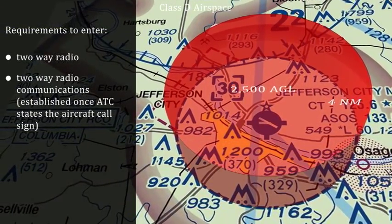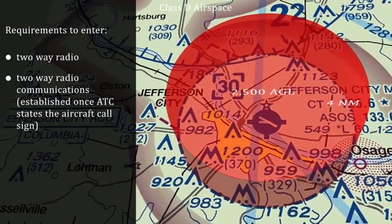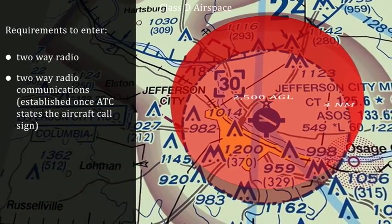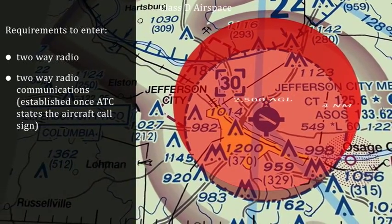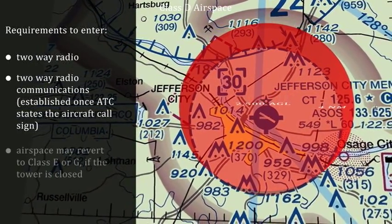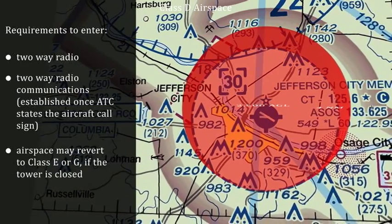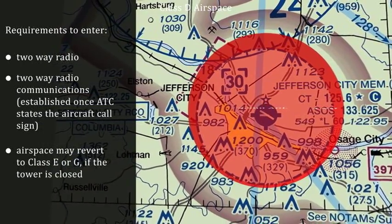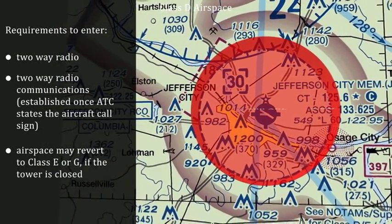It is common for a control tower to operate only during certain hours. When the tower is closed, the airspace usually becomes Class E airspace.